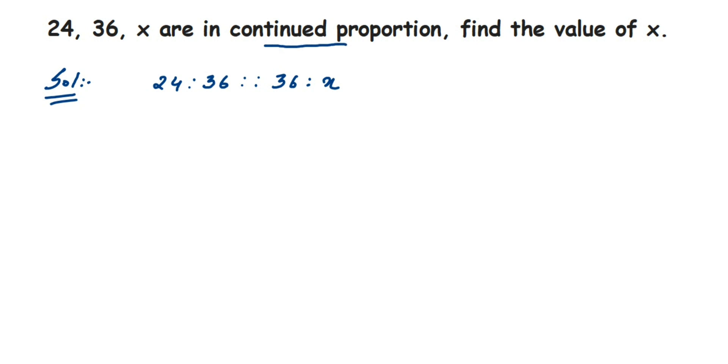Remember that we've been given 24, 36, and x in continued proportion. Proportion means the ratios are equal, so we can rewrite this as 24 is to 36, this symbol is proportion, they are in proportion with 36 is to x. Now we have to find the value of x here.